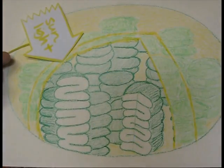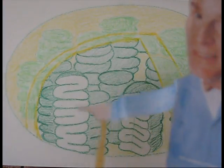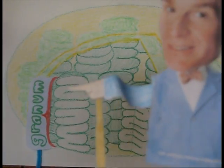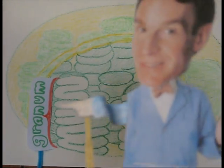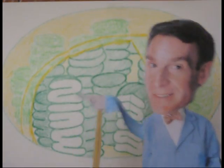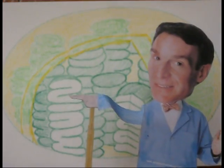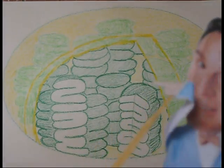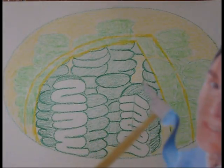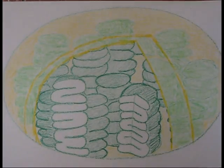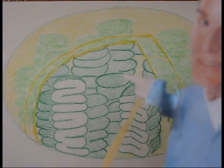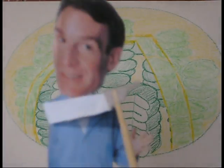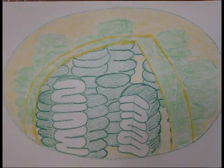Alright, in these pencils are chloroplasts, and chloroplasts contain granum. But wait, Bill, what makes plants green? Oh, good question. Dammit. In between the granum are semi-fluids called stroma. Stroma! Stroma!